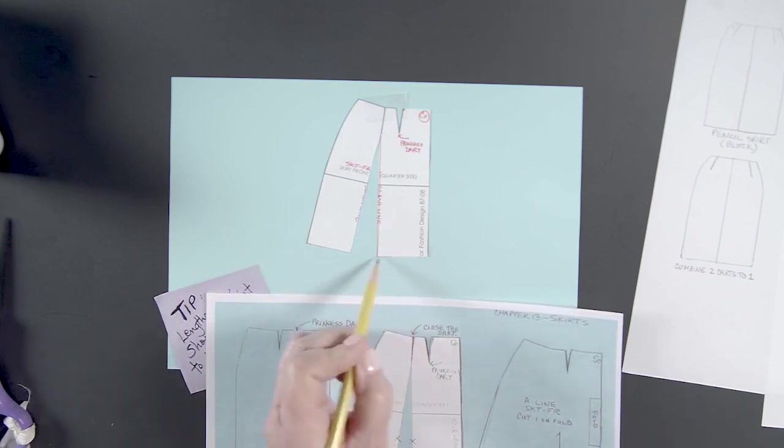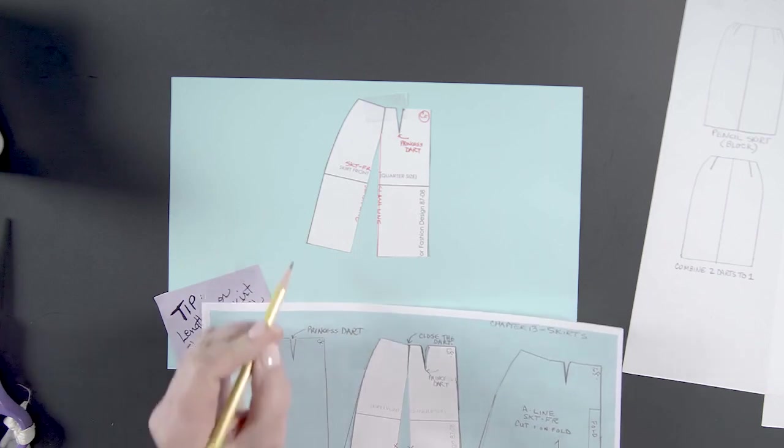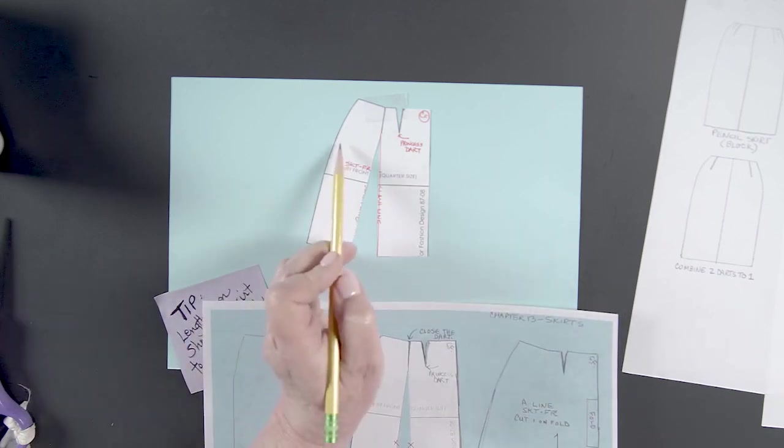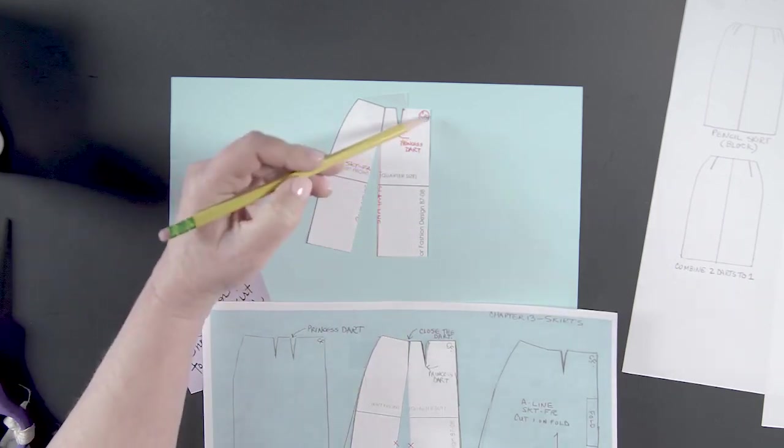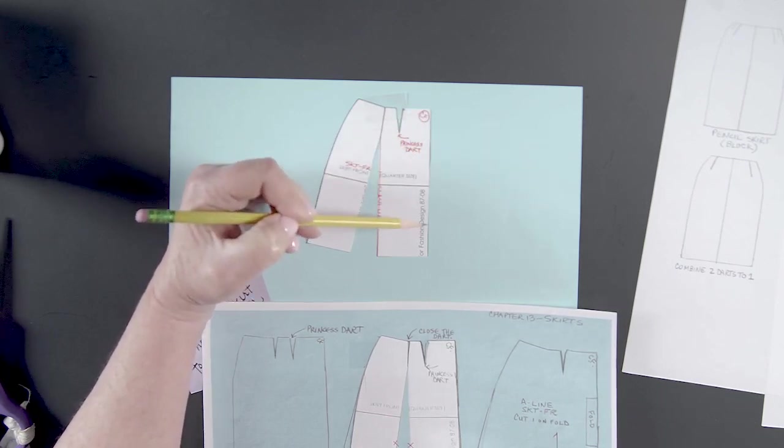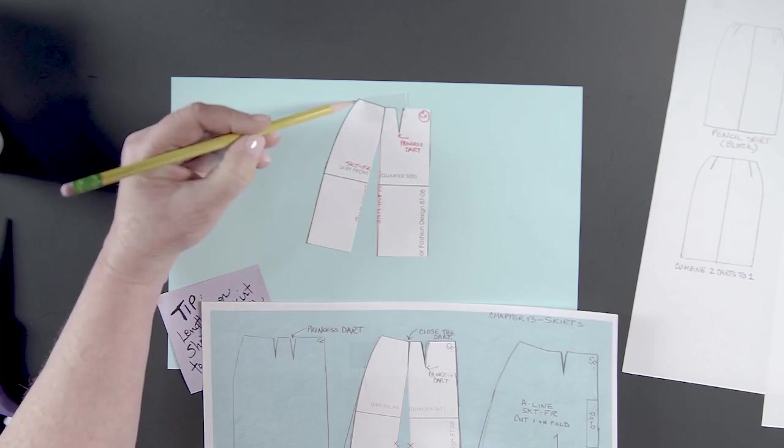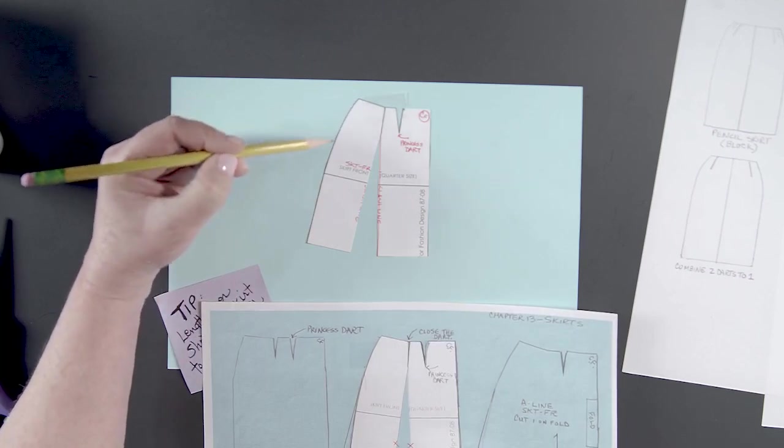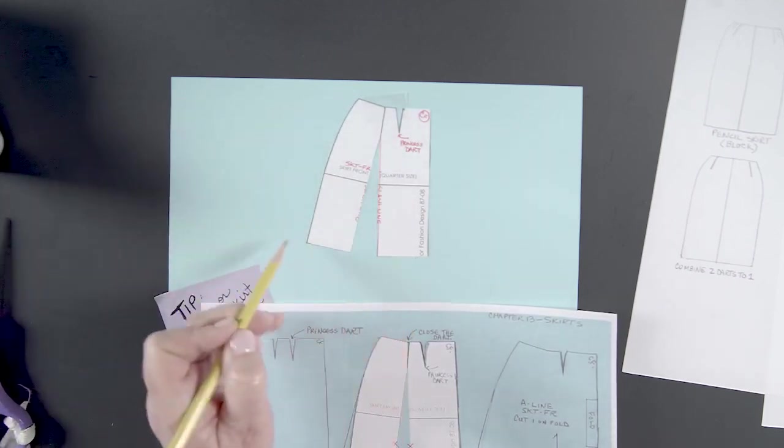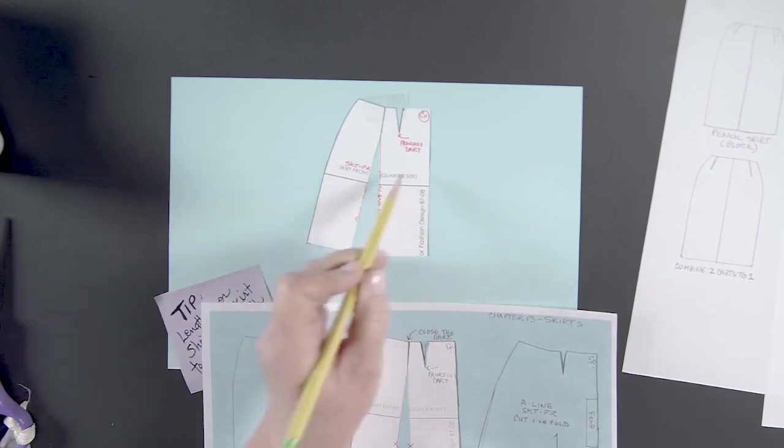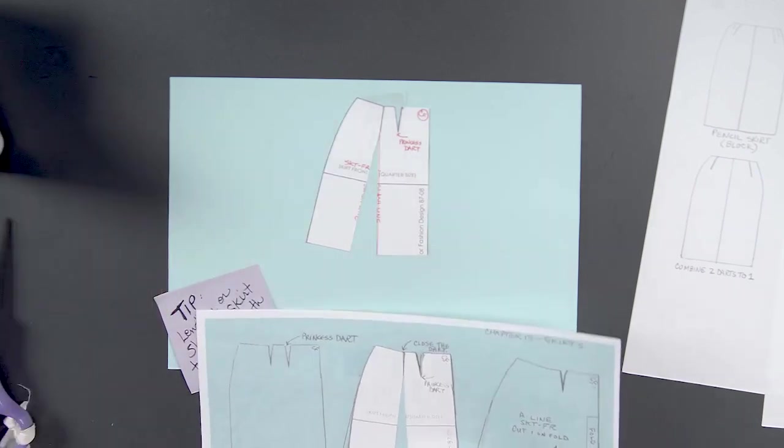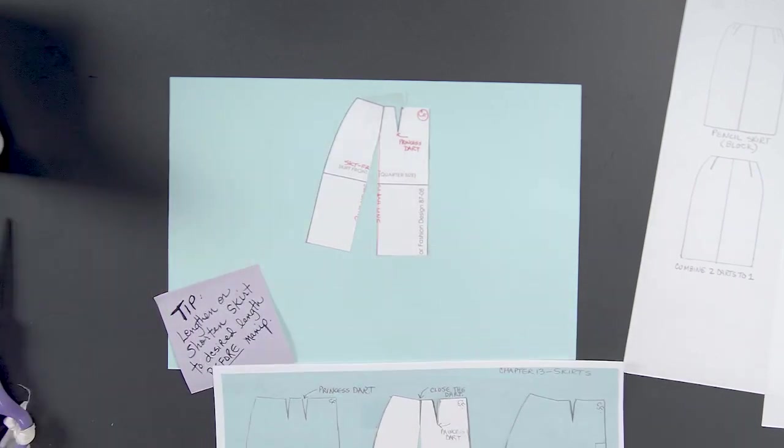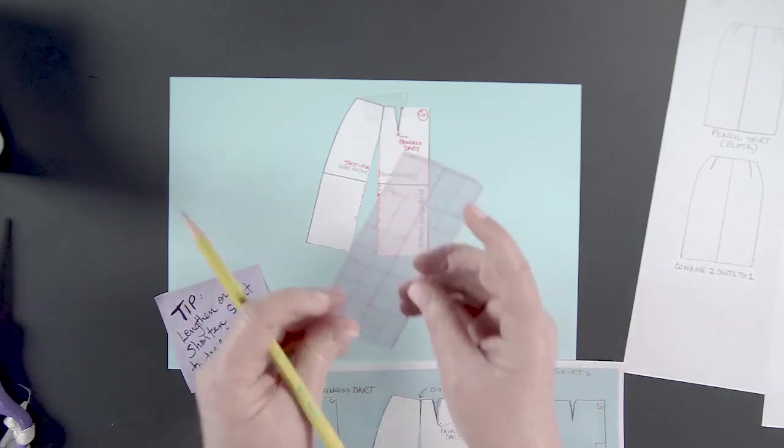We call this the sweep at the hem. But it's very likely that now that we have more ease here across her hips, we don't need this hip curve. See how the center front line is straight? It's always straight. Center front and center back are. The side seam always has a hip curve here. And now that we have more fullness throughout the skirt at these different locations, we don't need this hip curve right here.